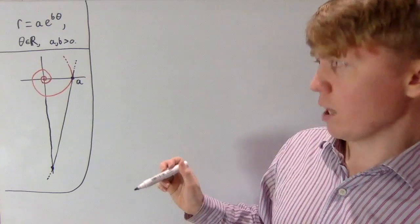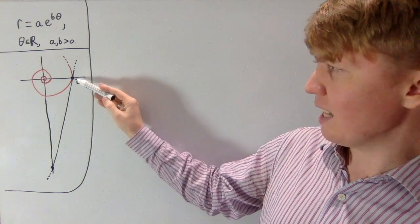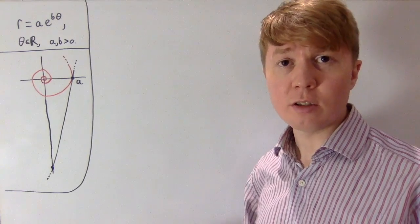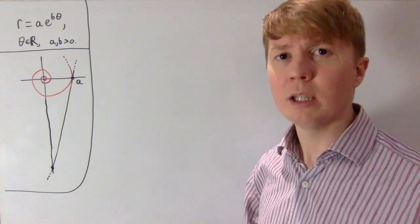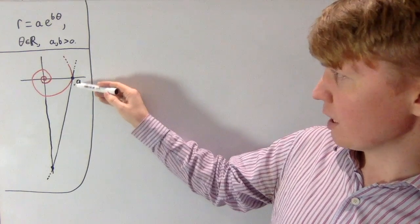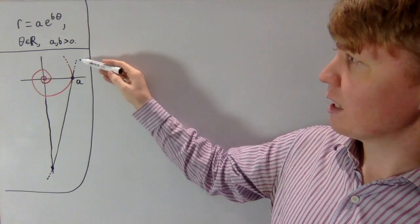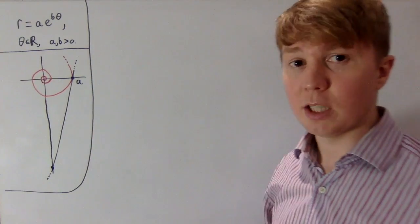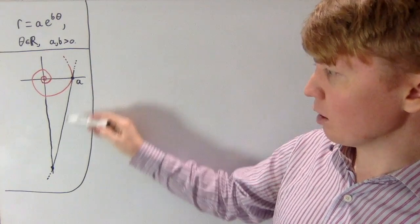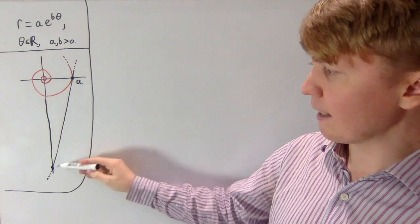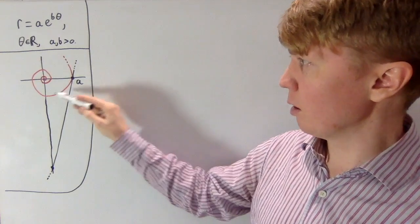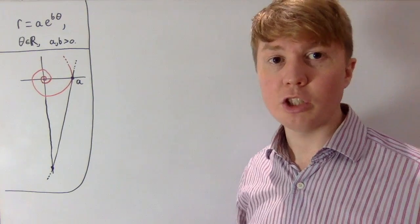The property we're interested in: imagine you take the point where θ is 0, so r is a — essentially the point x = a, y = 0 in Cartesian coordinates. We draw the tangent to the curve at this point and extend it down until it meets the y-axis. The length of this tangent from that point down to the y-axis is actually going to equal the length of the spiral going all the way to the origin.